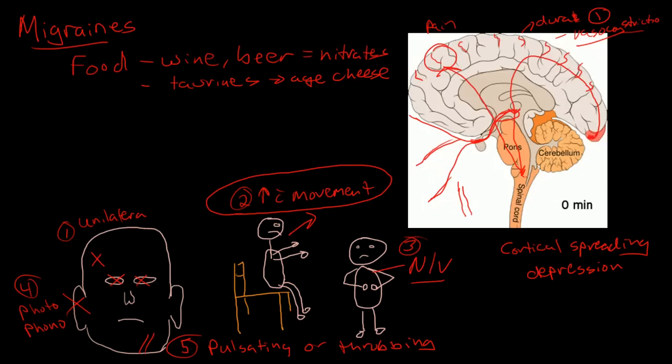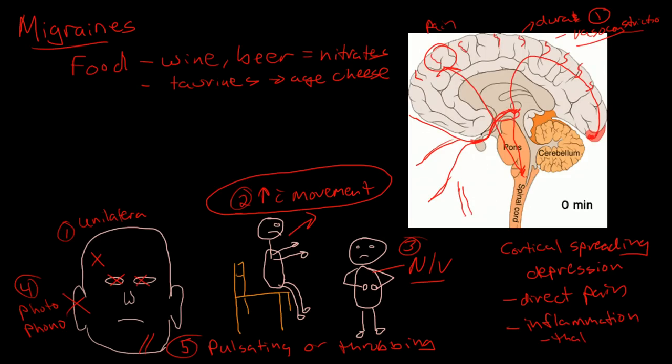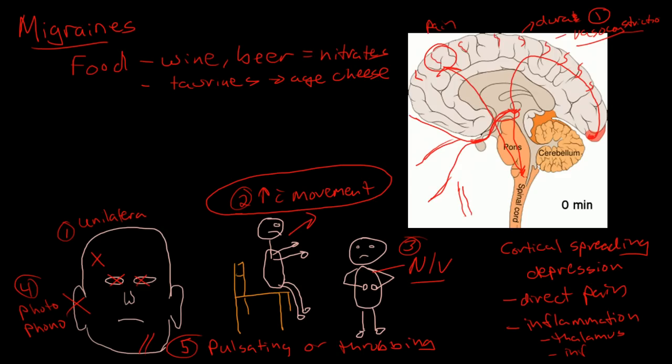Now interestingly enough, there is a direct pain stimulus and there is also inflammation of the nerves. So the thalamus itself becomes inflamed and the trigeminal nerve becomes inflamed, and it is believed that these processes are the primary causes of pain in migraines.